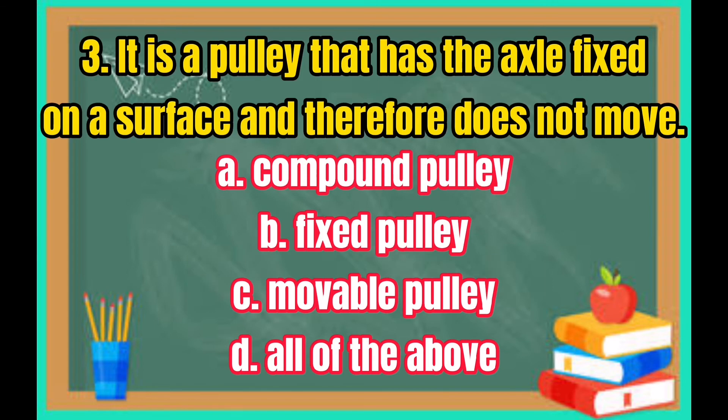Number 3: It is a pulley that has the axle fixed on a surface and therefore does not move. A. Compound pulley. B. Fixed pulley. C. Movable pulley. D. All of the above.